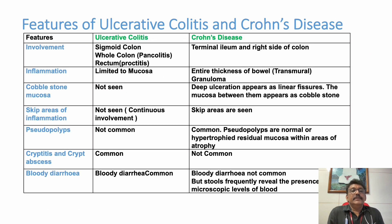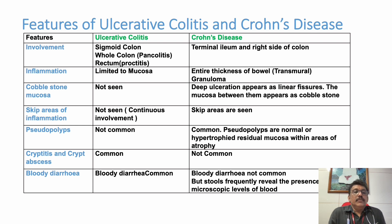You can see the differentiating features between ulcerative colitis and Crohn's disease. Involvement: sigmoid colon and rectum in ulcerative colitis; terminal ileum and right side of colon in Crohn's disease. Inflammation is limited to mucosa in ulcerative colitis, whereas Crohn's disease shows full-thickness transmural inflammation with granulomas. Cobblestone mucosa with deep linear fissure ulcers is seen in Crohn's disease. Skip areas: not seen in ulcerative colitis, but seen in Crohn's disease.